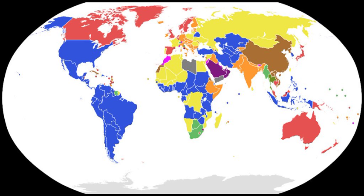The president-parliamentary system is used in Guinea-Bissau, Mozambique, Namibia, Russia, Senegal, and Taiwan. It was also used in Ukraine, first between 1996 and 2005, and again from 2010 to 2014; in Georgia between 2004 and 2013; and in Germany during the Weimar Republic, the constitutional regime between 1919 and 1933.